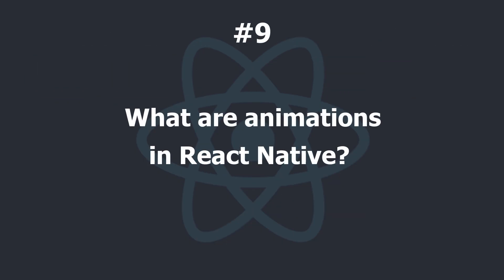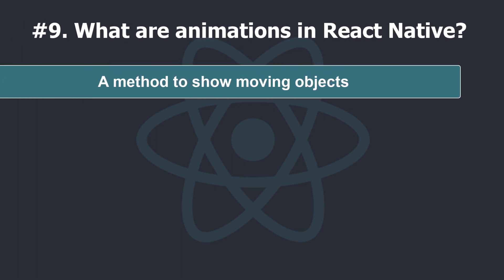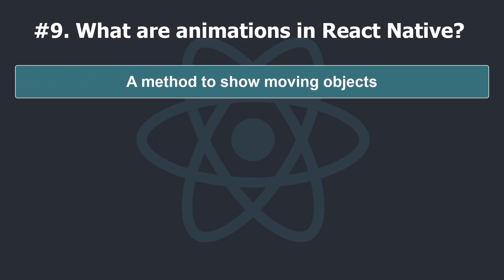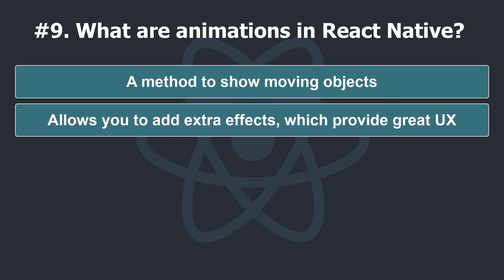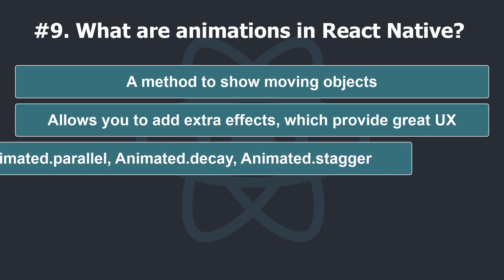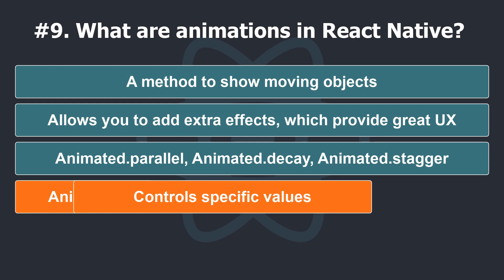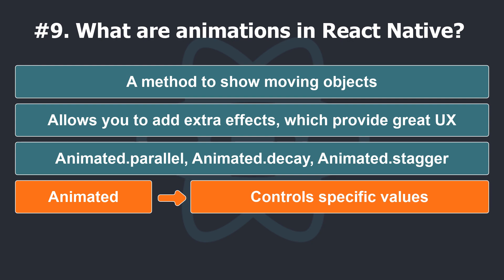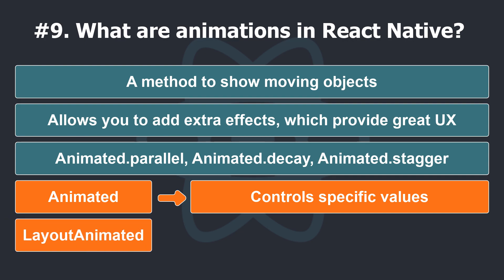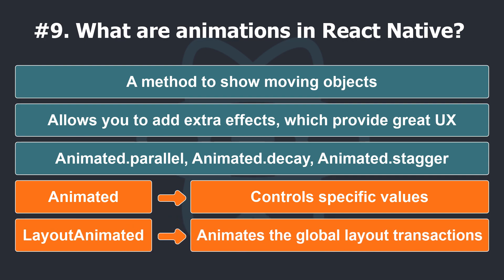What are animations in React Native? Animation is a method in which images are manipulated to appear as moving objects. React Native animations allow you to add extra effects which provide a great user experience in the app. We can use it with the React Native API: Animated.parallel, Animated.decay, and Animated.stagger. React Native has two types of animation: Animated, which is used to control specific values and has start and stop methods for controlling time-based animation execution; and LayoutAnimation, which is used to animate global layout transactions.